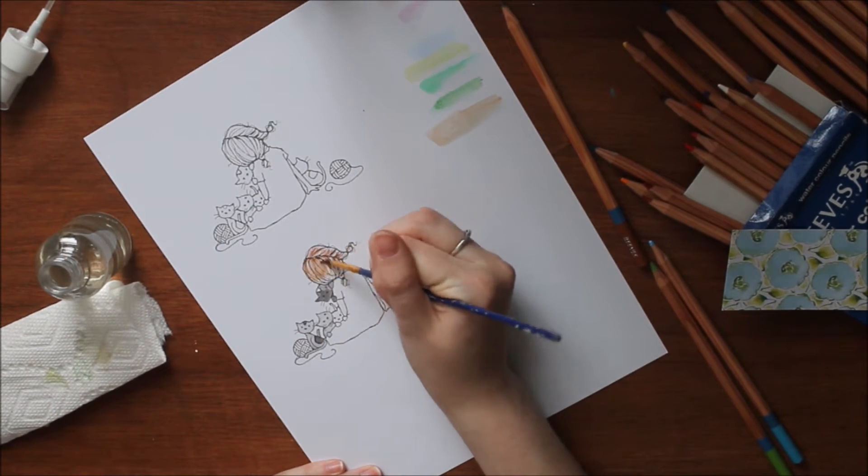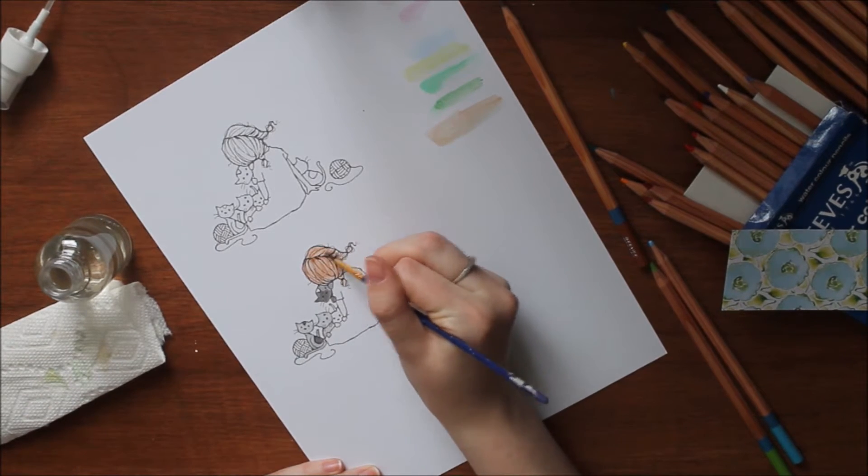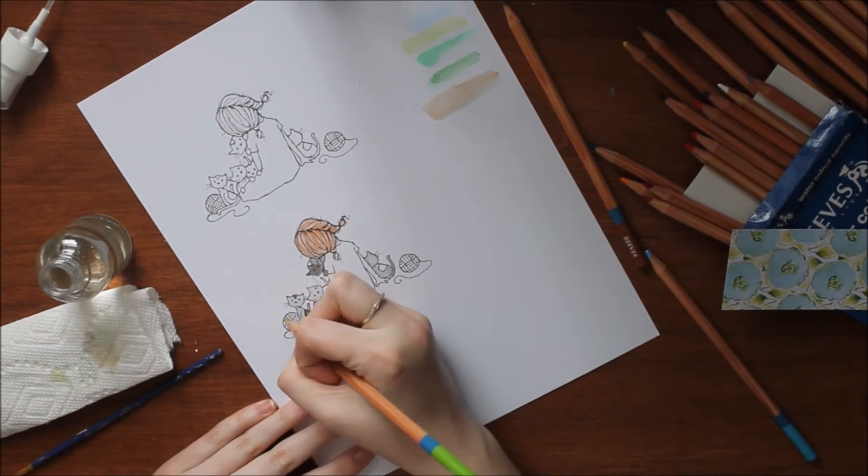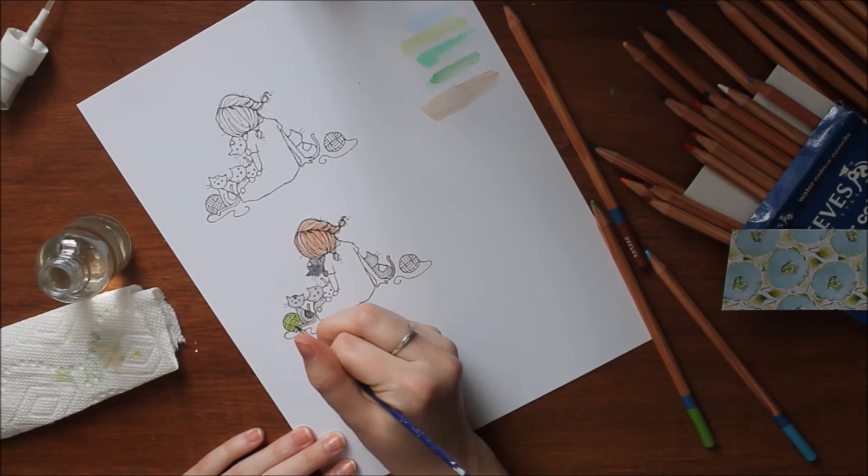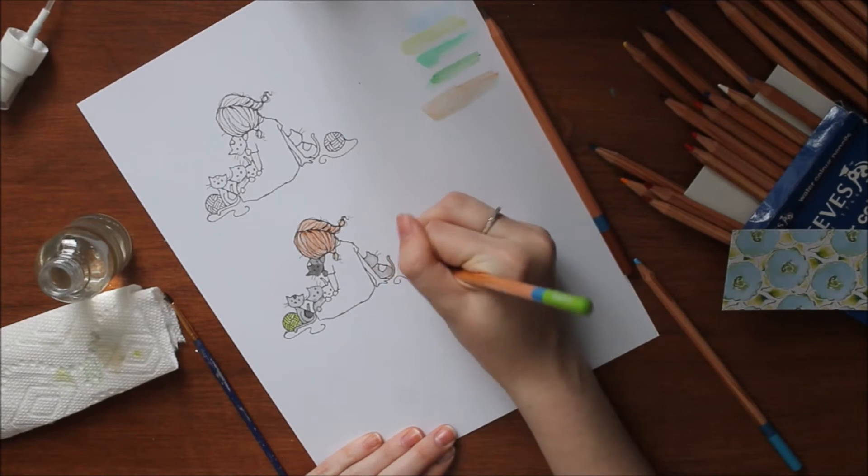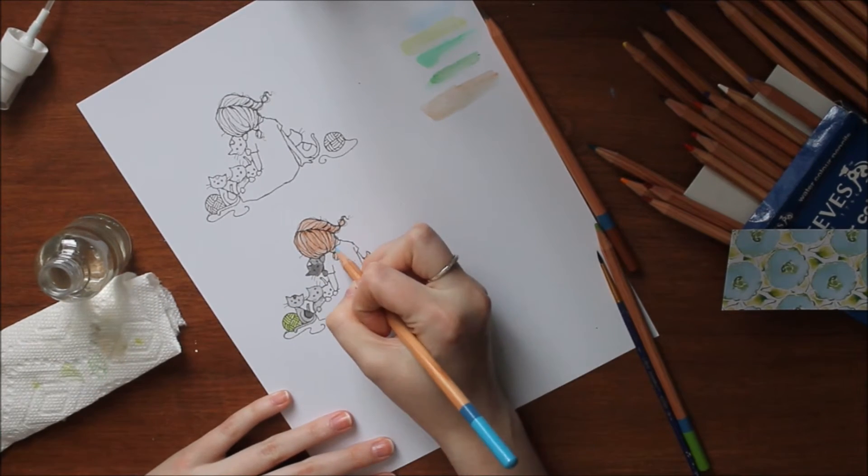One thing about watercolor pencils that I don't like is how much they do blend. I like a lot more detail, so I like the darker and lighter, but on this image it worked because of how it's printed on this heavyweight cardstock I'm using. I'm using the lime green on the yarn balls like I said, and then I'll be doing the blue dress.